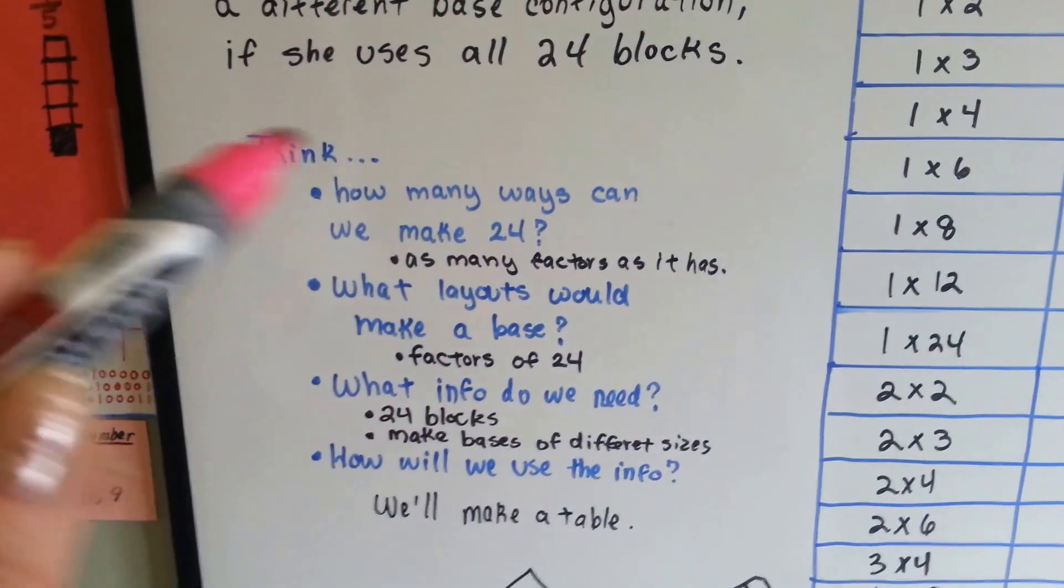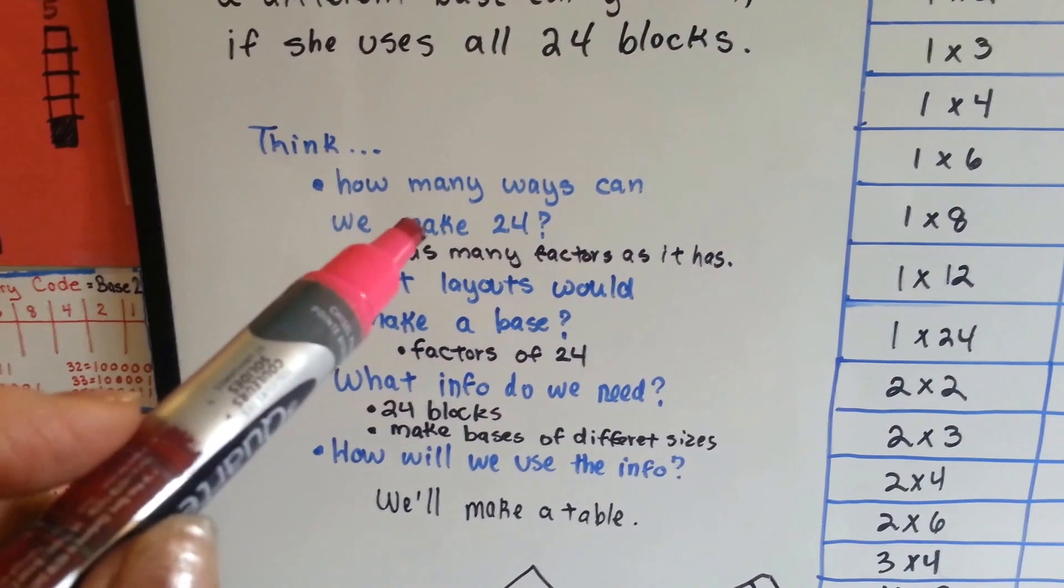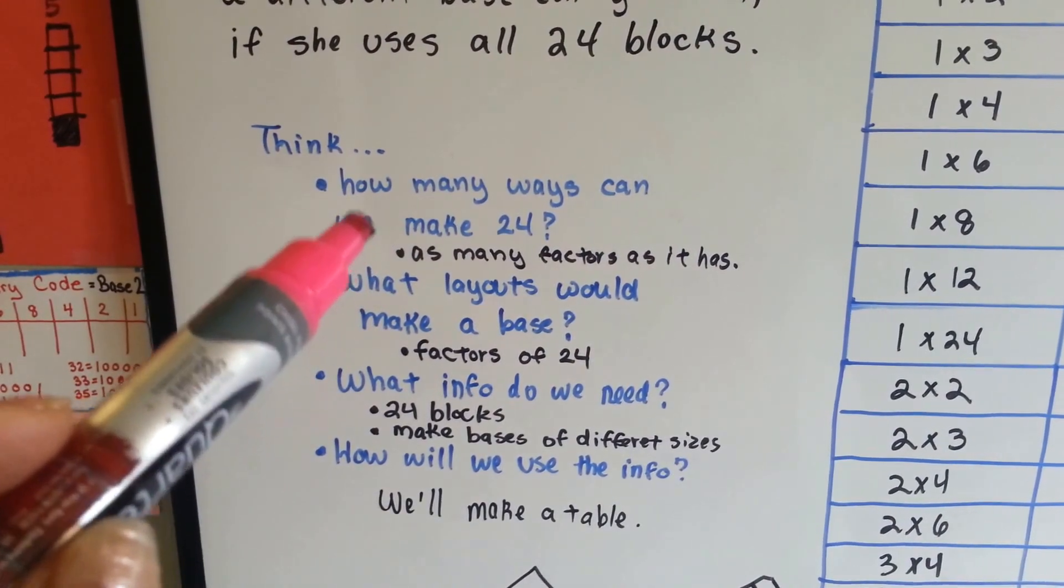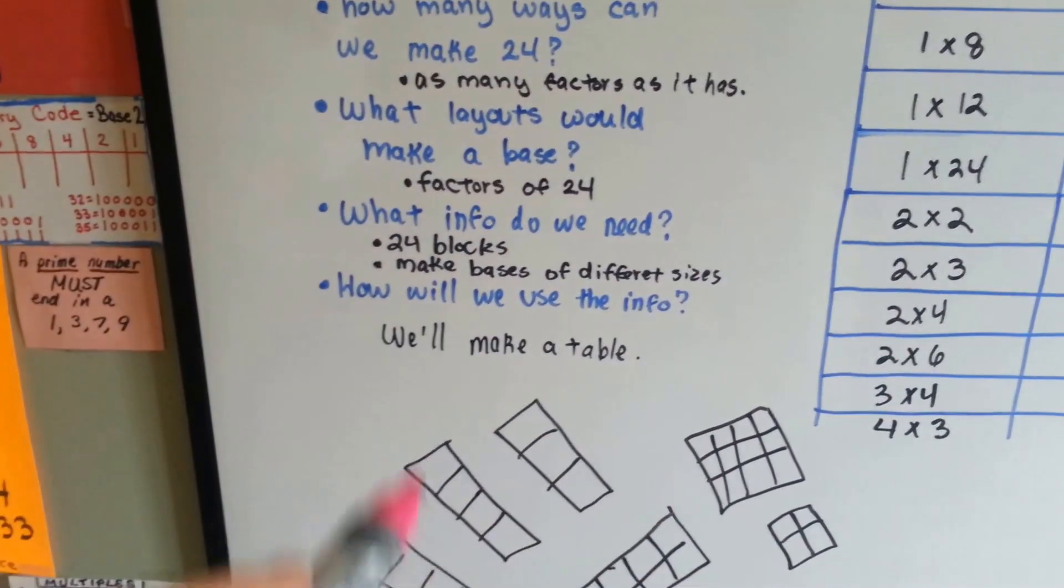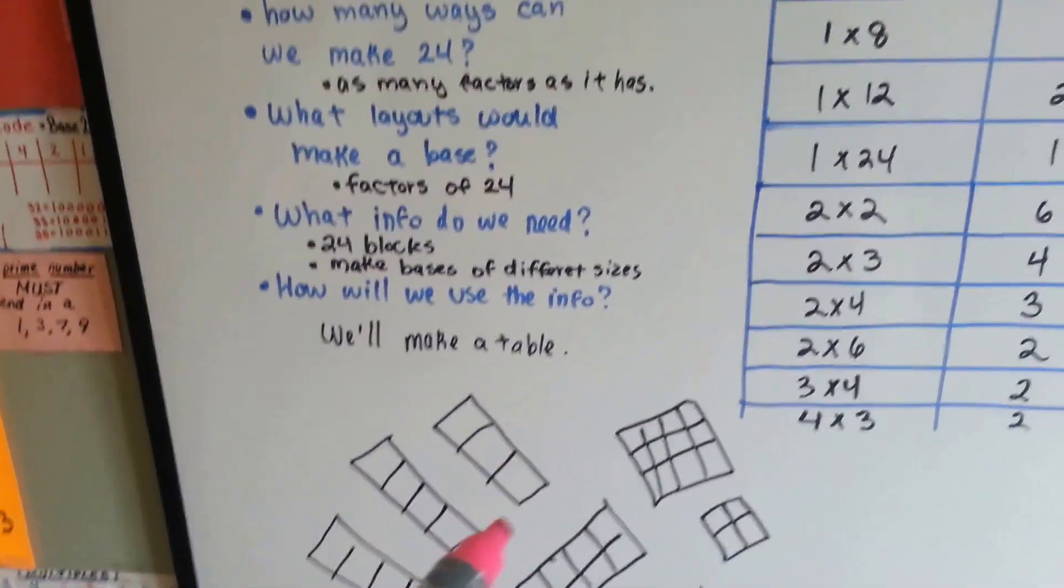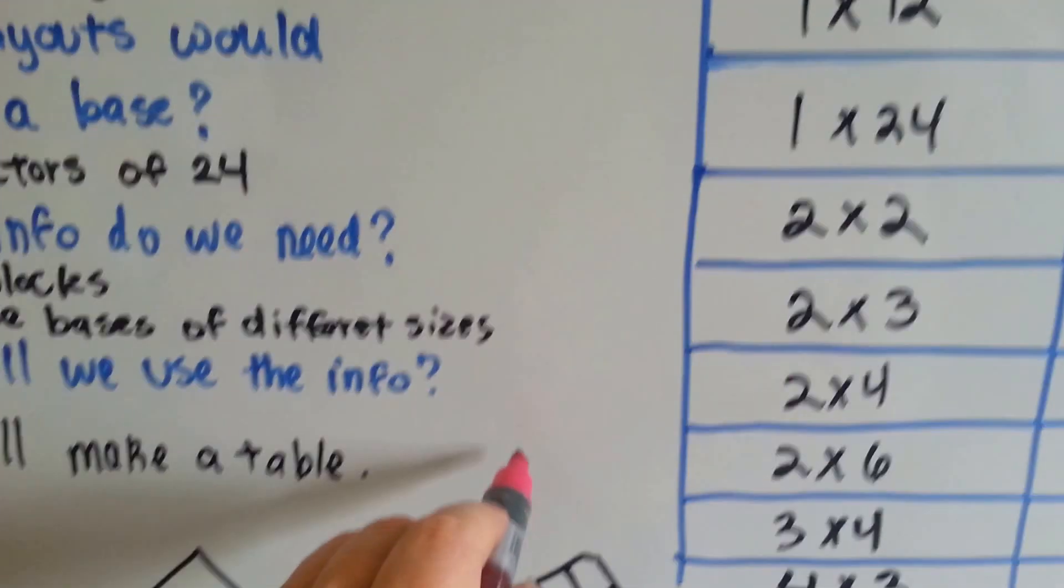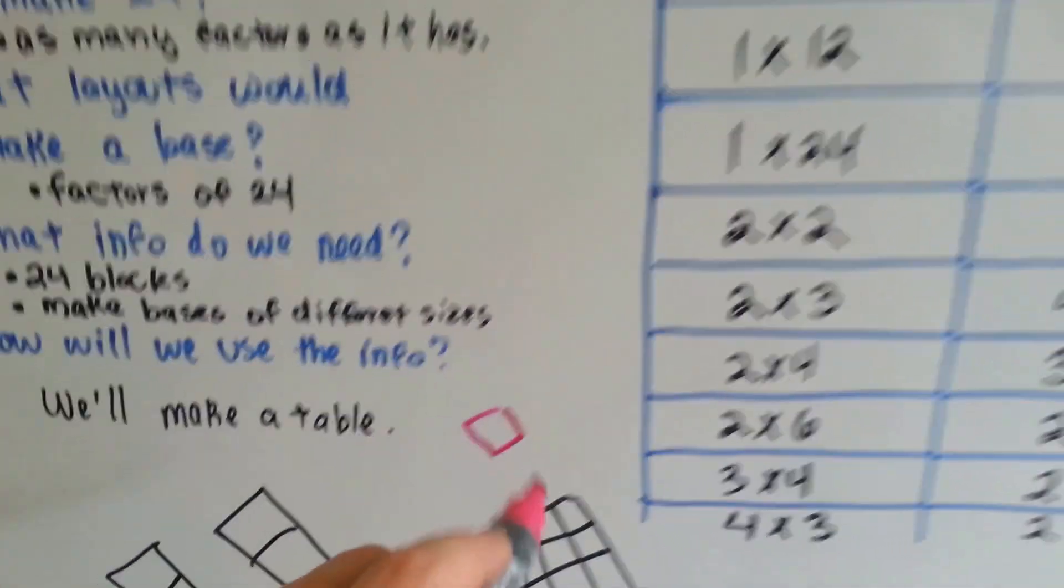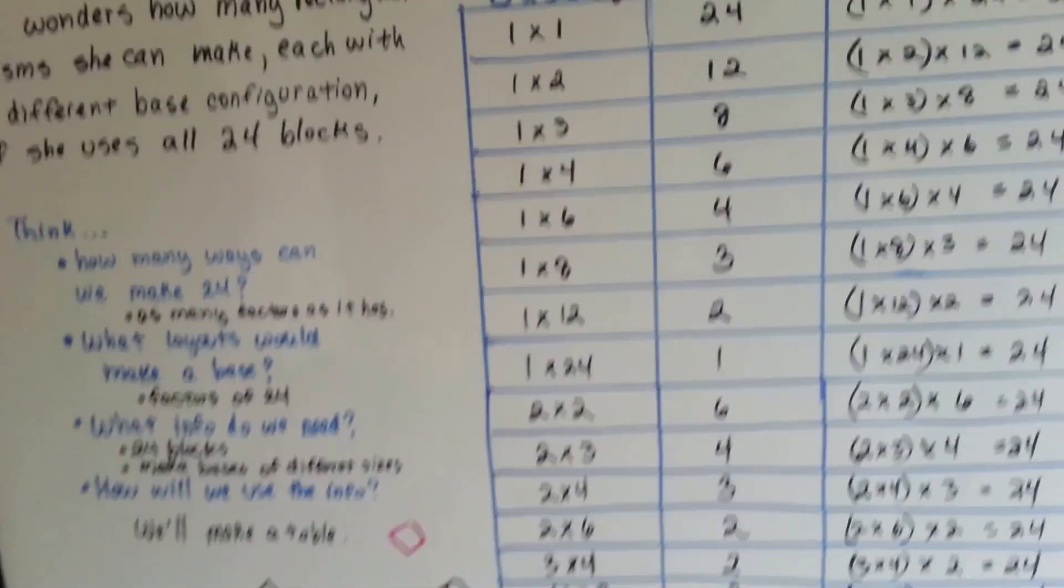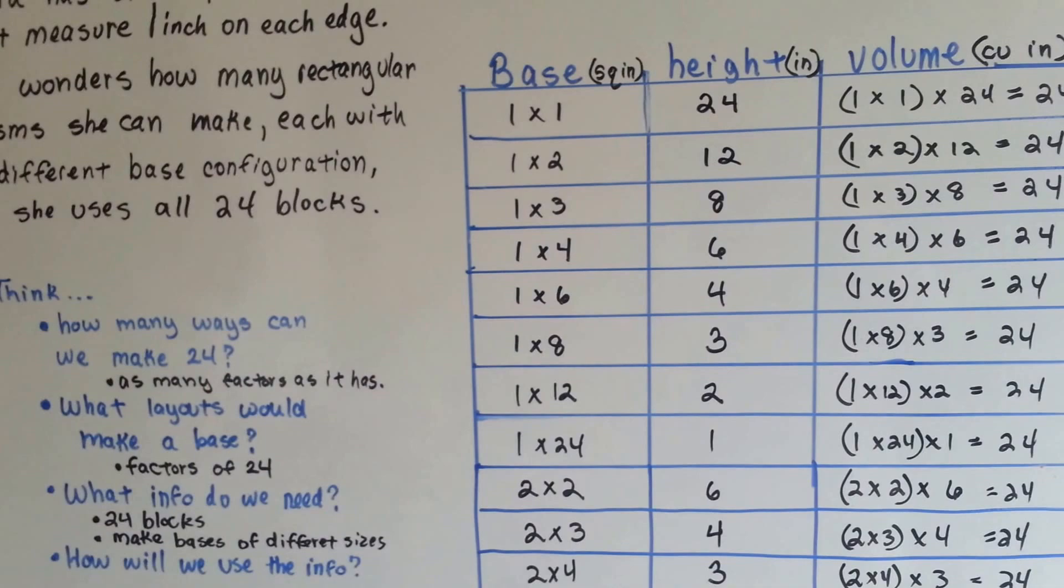So she has to think and figure out how she's going to do this. She figures there are going to be factors of 24 to do this. So she wants to make a bunch of different bases and stack them and use all 24 blocks. She could take one block and stack them 24 high. So her base would be one by one and her height would be 24.